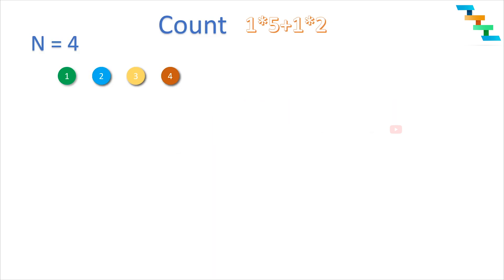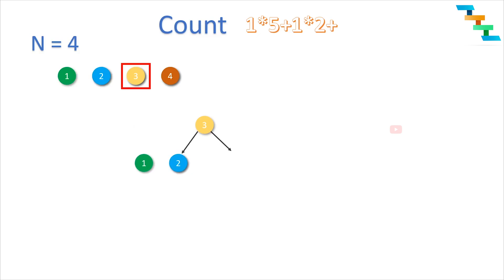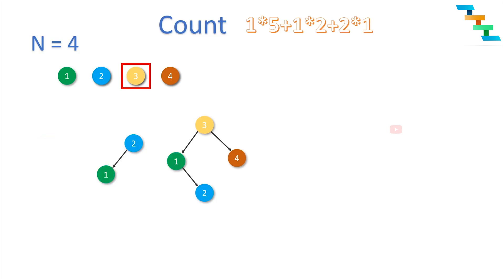Now we will take root node 3. In this case, values 1 and 2 are less than 3, so they form the left subtree, and 4 forms the right subtree. With 1 and 2 we can form 2 unique subtrees, and with 4 we can form only 1 unique subtree. So 2 multiplied by 1 gives 2 — we can form 2 unique subtrees with root node 3.